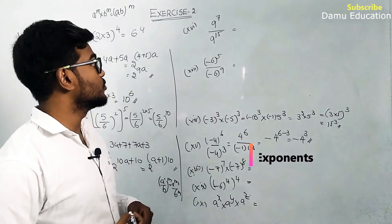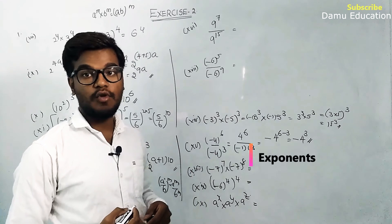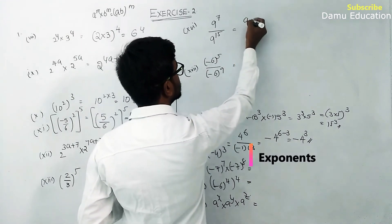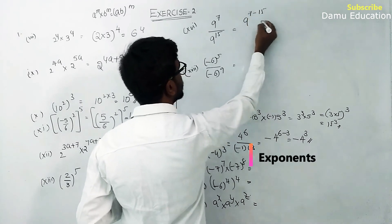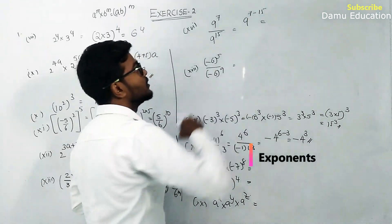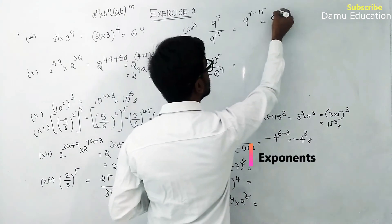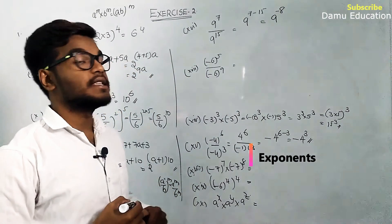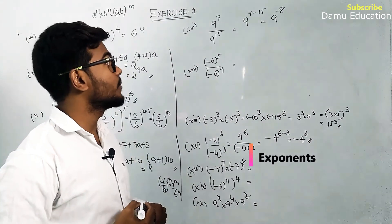Next: 9 power 7 by 9 power 15. Using a power m by a power n equals a power m minus n: 9 power 7 minus 15 equals 9 power minus 8.